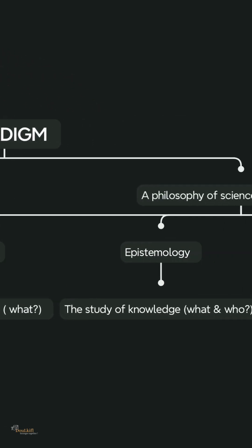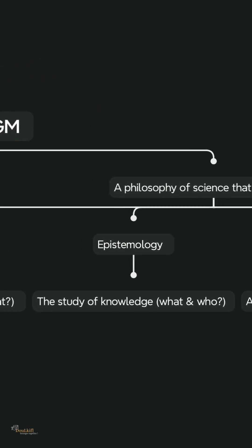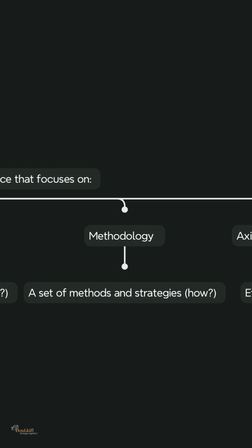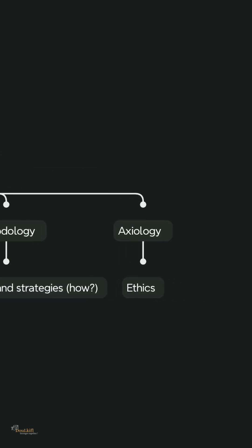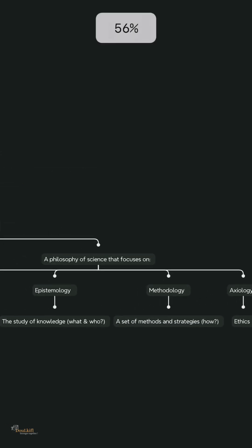The epistemological question is about the relation between the sample and the topic, and the outcome of this relationship. The methodological question is about the type of methods and tools. And axiology is about ethics.